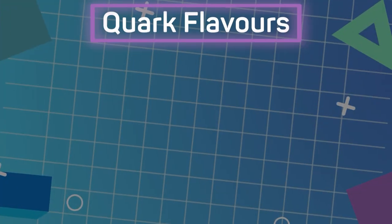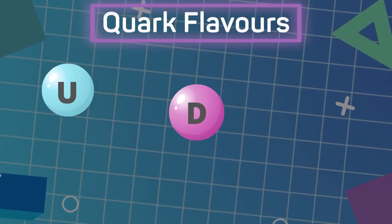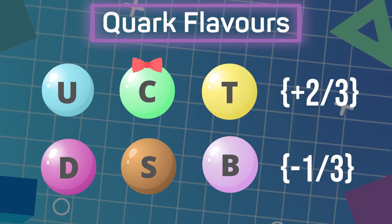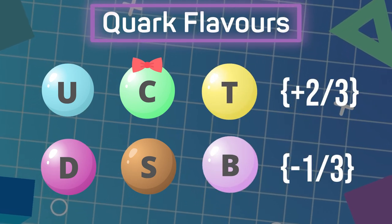Quarks are the smallest unit of matter — they form protons and neutrons. They cannot be broken down into substructures because they are in their purest form, and always appear in groups of three. There are six main types of quarks, and weirdly enough they are called flavors, even though they're not associated with food. These include up, down, charm, strange, top, and bottom.